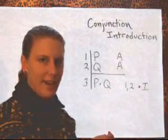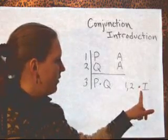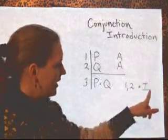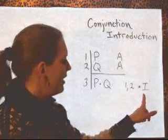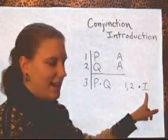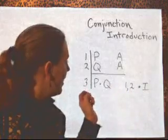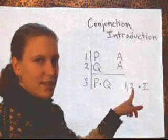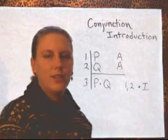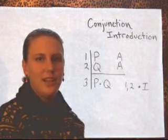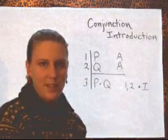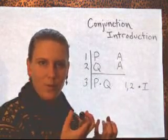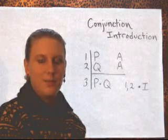The way we justify that is by saying we introduce a conjunction, so dot, and then introduction is symbolized by just writing an I. And then we say where we got each piece. We got the first piece from line one, and the second piece from line two. For conjunction introduction, that's all you need. You need to have the first piece on a line, the second piece on a line, and then you can put them together with a conjunction sign in between them.